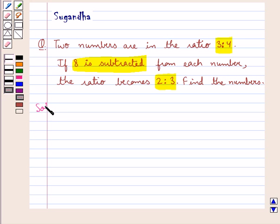Let's proceed with the solution now. In the question we are given that the two numbers are in the ratio 3 is to 4. So let the required numbers be 3x and 4x.